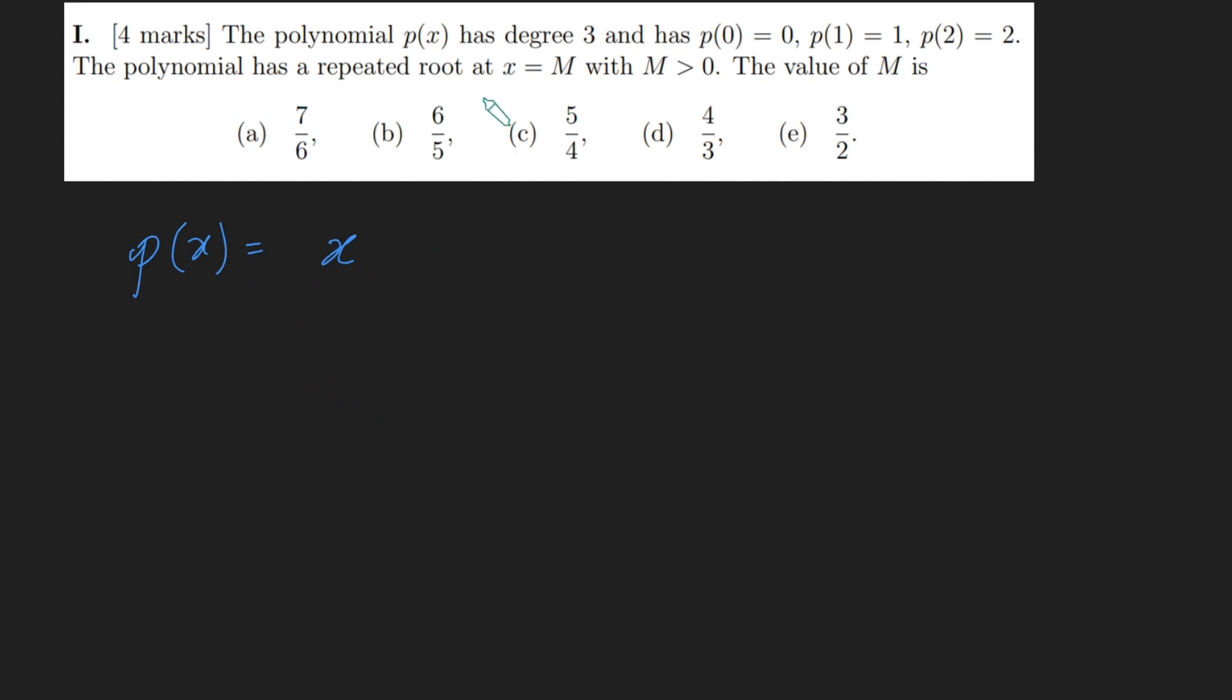Also, we know it has a repeated root at x equals M, and so that means I can also take out an x minus M squared, like so. This here is a cubic, so there are no other factors. However, one thing we want to be careful of is it doesn't necessarily mean p of x equals this. It could be that p of x is any scalar multiple of this. So I'm going to put an A here because if I multiply x times x minus M squared by a constant, that's not going to change the values of the roots. It's just going to stretch this parallel to the y-axis.